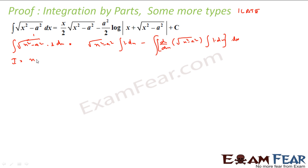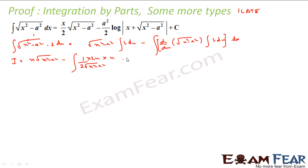So I = x·√(x²−a²) − ∫[1/(2√(x²−a²))·2x]·x dx. The 2's cancel, giving us: I = x·√(x²−a²) − ∫x²/√(x²−a²) dx.